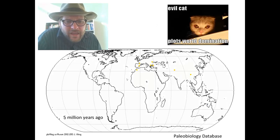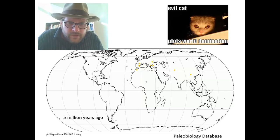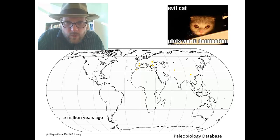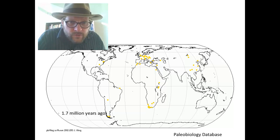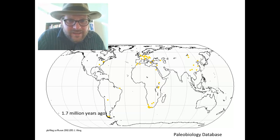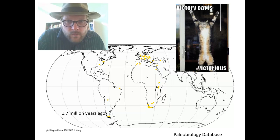Cats, the genus Felis, first originated in Europe, Asia, and North Africa, but they were set on world domination. Quickly, by 1.7 million years ago, they had spread to the New World, inhabiting North America and getting down into South America. The only continent they hadn't yet dominated was Australia. Yes, they were victorious in their world domination, and even now they are in Australia.